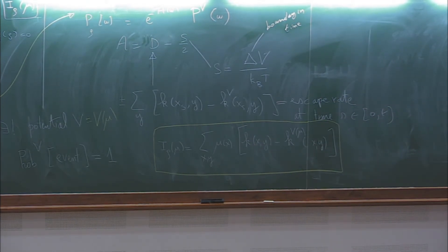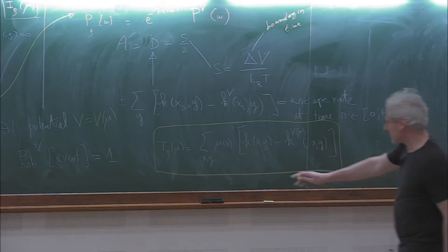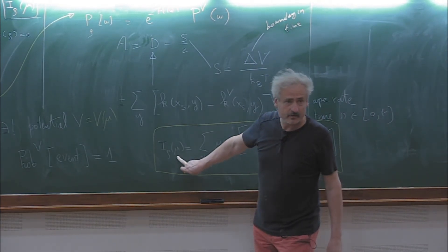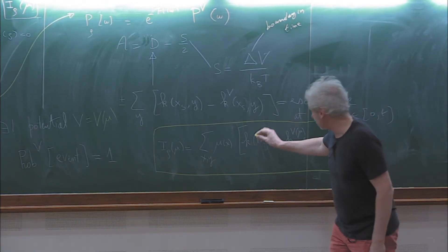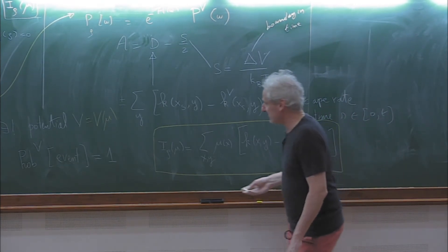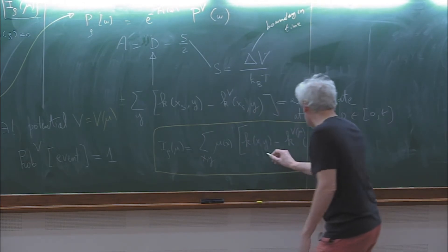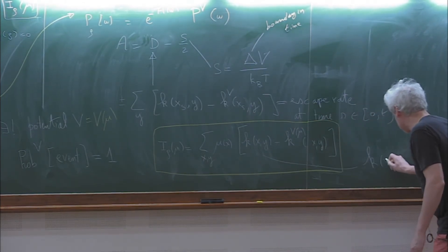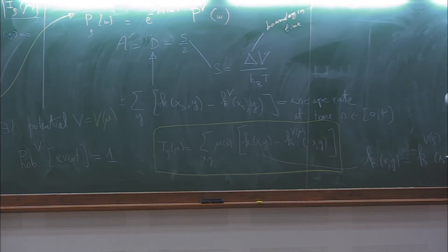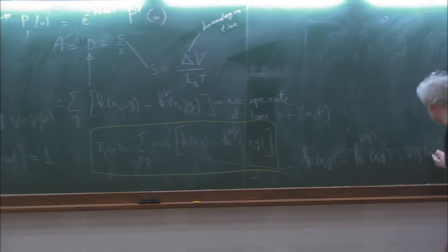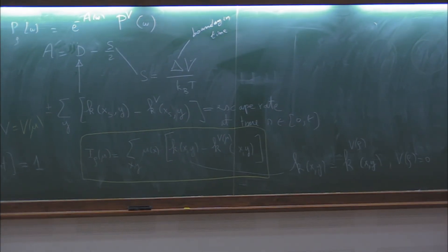There are a number of remarks. First, how does this depend on ρ? Well, it depends on ρ because k here is k_{V(ρ)}(x,y)—but V(ρ) is of course zero. It's the original thing because I already have ρ and I don't need to add anything.